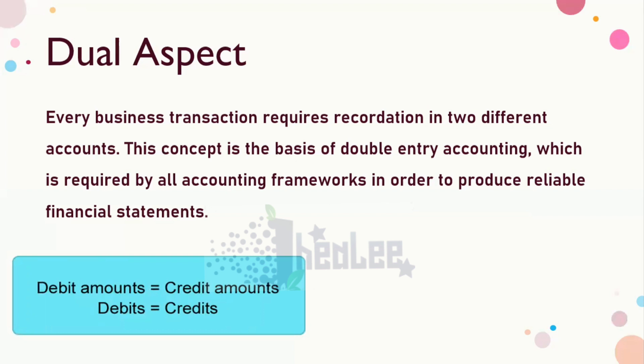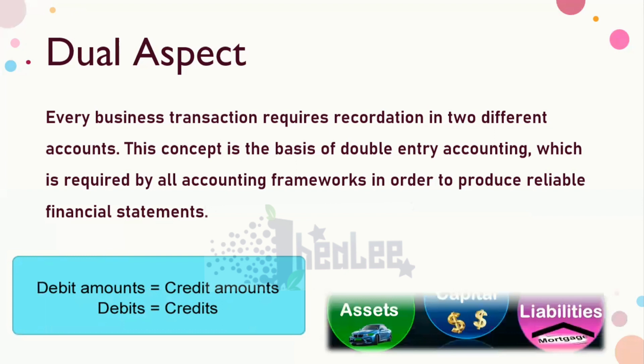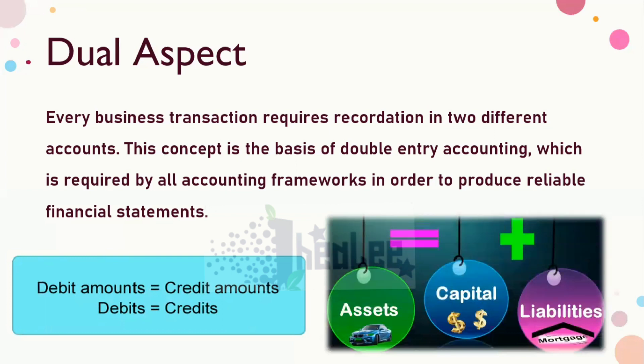Coming out of the dual aspect concept, we have the equation: assets equal capital plus liabilities. So your total assets will always be equal to capital plus liabilities once you apply the dual aspect concept.